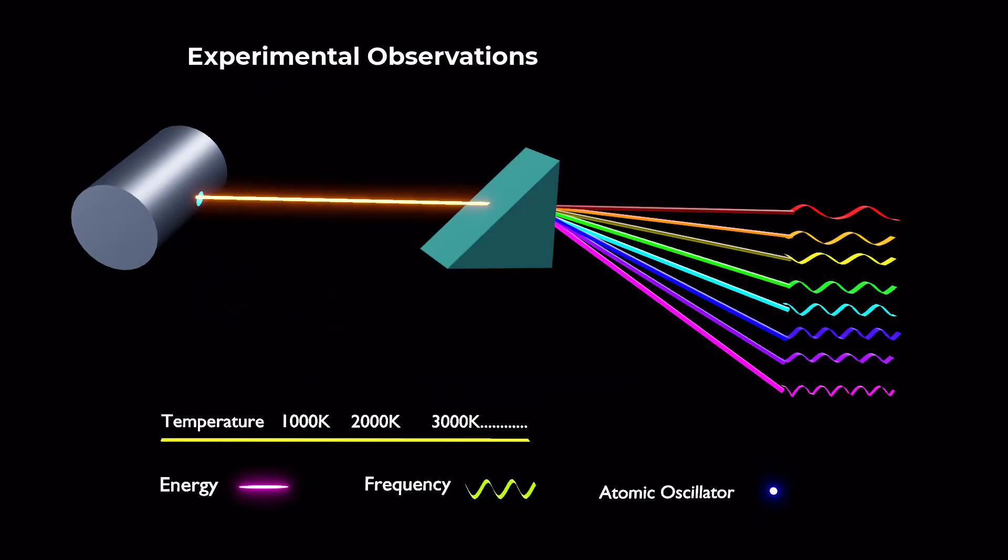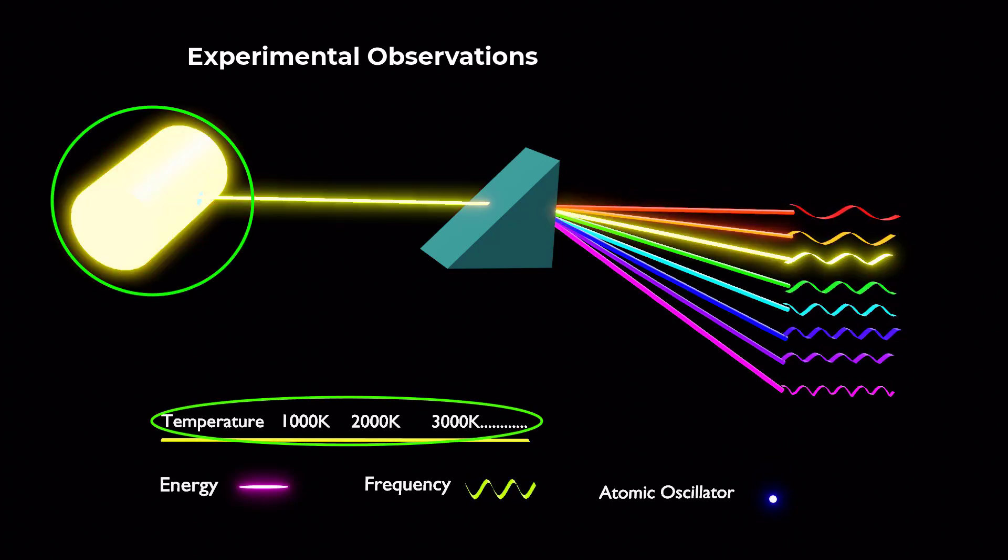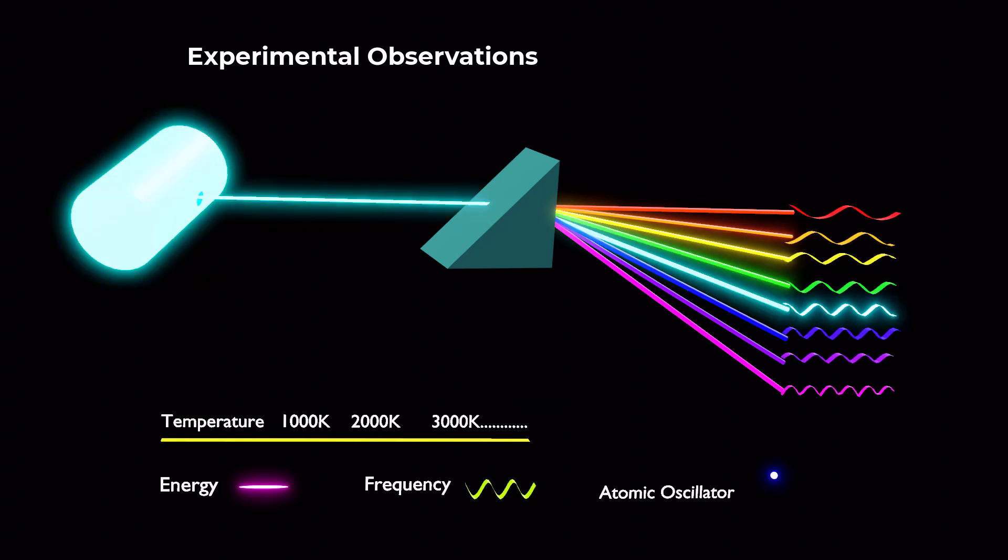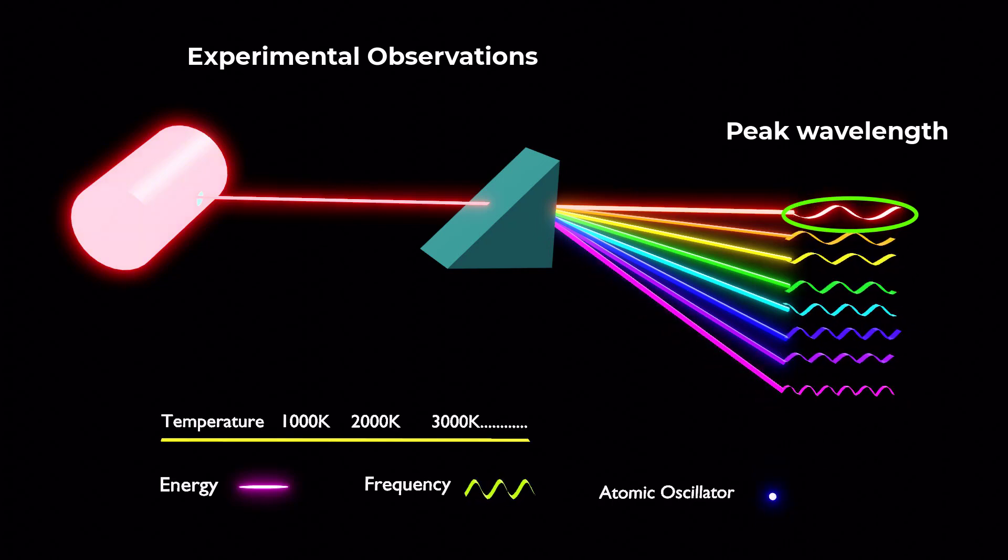Experimental observations have revealed that at a specific temperature, a black body radiates more energy at a particular wavelength than others. This wavelength with maximum energy is known as the peak wavelength.